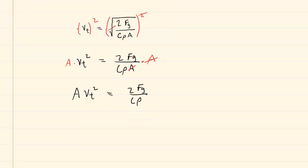To finish solving for a, it would be useful to multiply both sides by 1 over the terminal speed squared. This way the terminal speed squared cancels on the left side. We have the area is equal to 2 times fg over c rho times terminal speed squared.